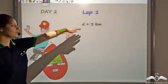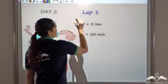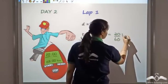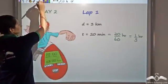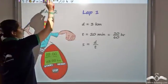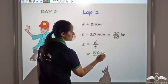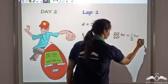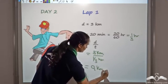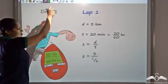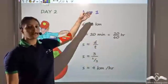Let us find his speed for each lap on this day — Day 2. The first lap was 3 km. He took only 20 minutes to cover this round. So 20 minutes means 20 by 60 hours, which is 1 by 3, one third of an hour. So speed is distance by time: 3 km divided by 1 third of an hour. So speed is 3 divided by 1 by 3, which is 9 km per hour. His speed for Lap 1 is 9 km per hour.